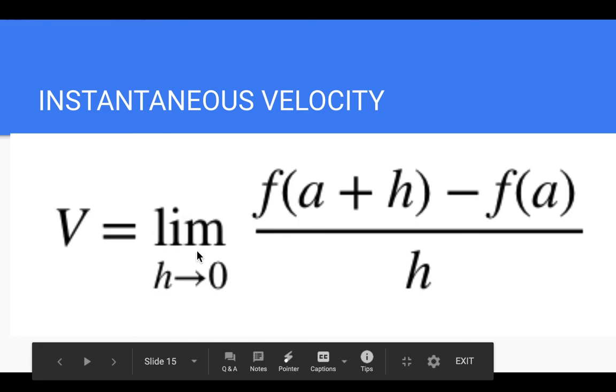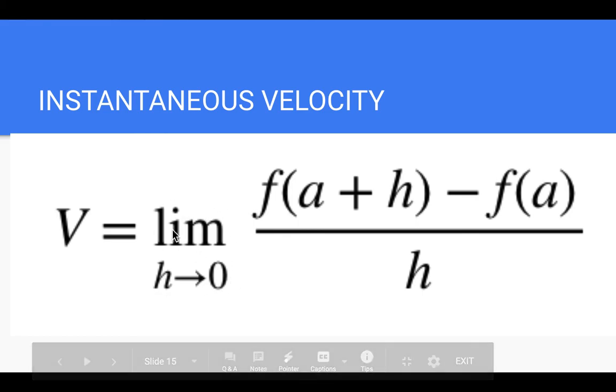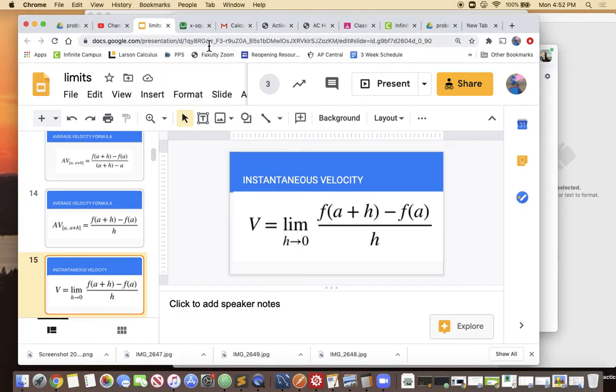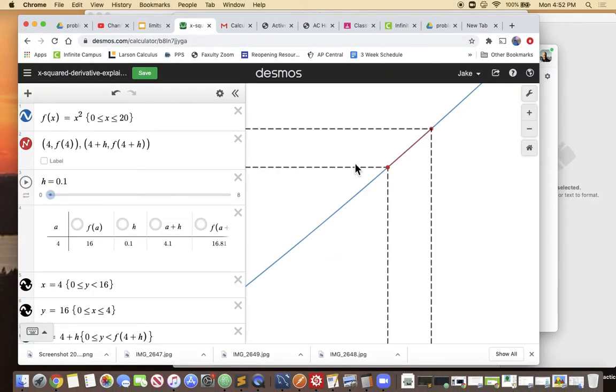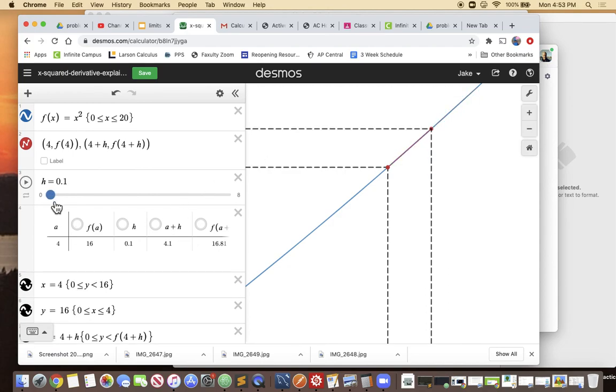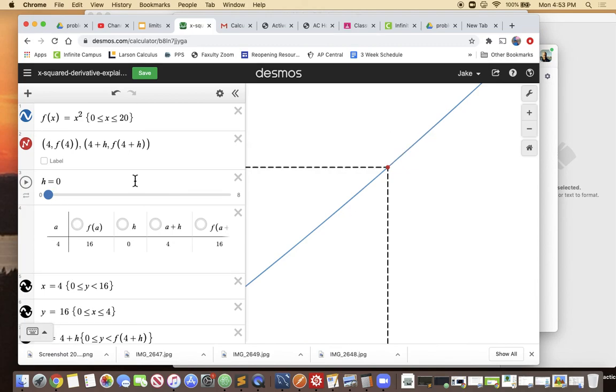this concept—the limit as h approaches zero. And then in that case we're going from a secant line to a tangent line, from the average velocity between two points to the instantaneous velocity at a point. Okay, so hopefully that helps—from average velocity to instantaneous velocity. Thank you.